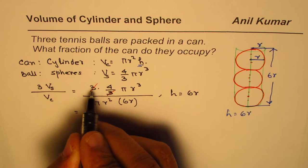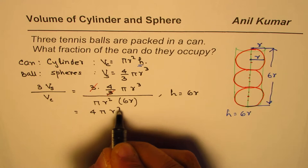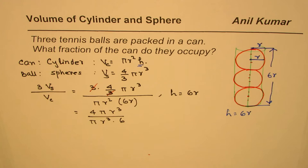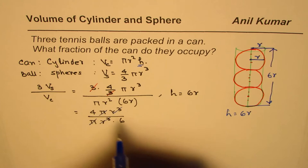Let me do it in two steps. First, let me get rid of this fraction, so we get 4πr³ divided by πr² times three times six.